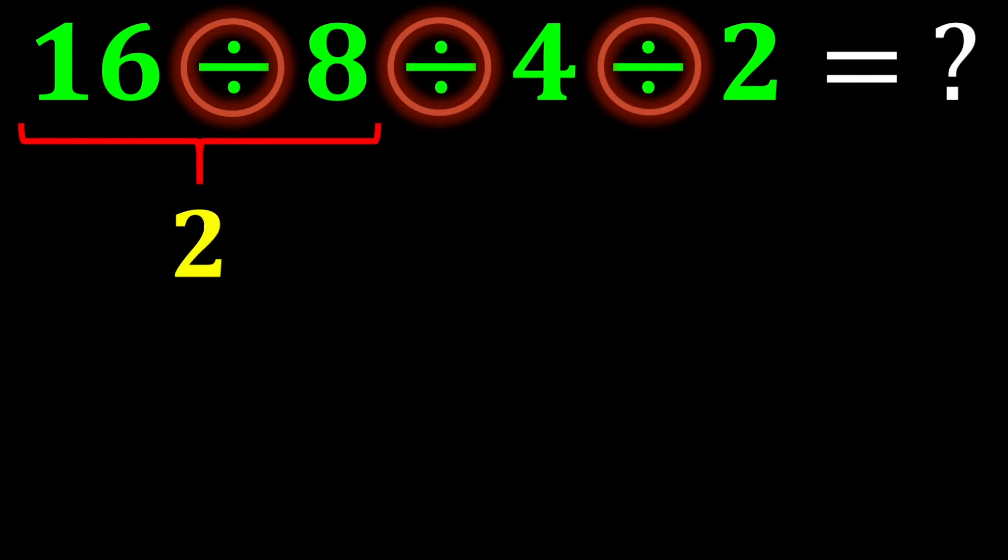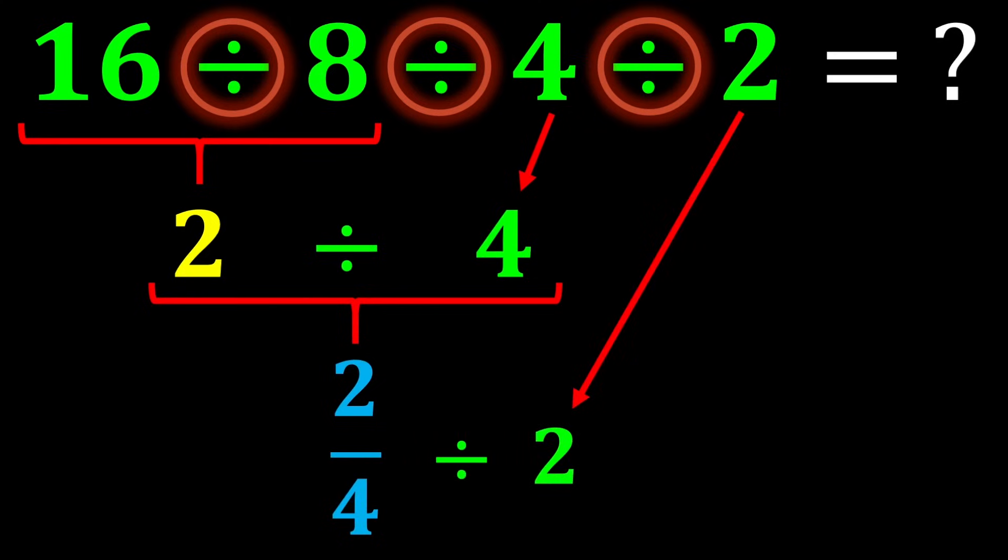16 divided by 8 gives us 2. Then 2 divided by 4 gives us 2 over 4. Finally, we need to divide 2 over 4 by 2. To solve this part of the question, we use the KCF rule.